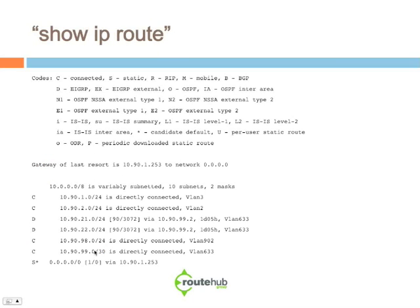ShowIPRoute is one of the most critical commands in networking — you have to understand this, and honestly it's not that difficult. At the top of the output, you see a legend of codes that helps you understand what is happening. For example, C means connected, meaning there is an actual interface on this router configured for that network. S is for static routes, D is for EIGRP, with variations for external EIGRP, and there are codes for OSPF, RIP, ISIS, and others. A star indicates a candidate default, which in layman's terms is the default gateway.